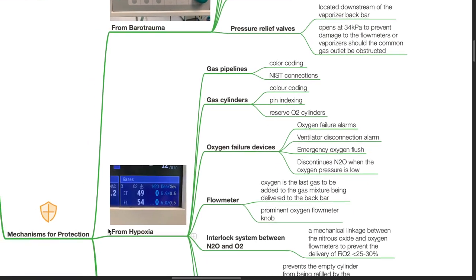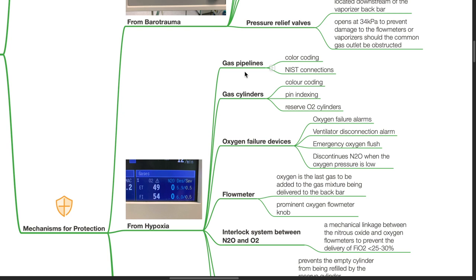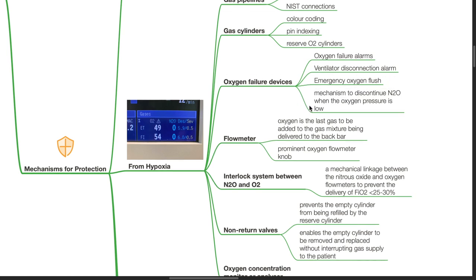Mechanisms for protection from hypoxia. Gas pipelines are color coded and have NIST connections. Gas cylinders are color coded, pin indexing is present and reserve oxygen cylinders are present. Oxygen failure devices such as oxygen failure alarms, ventilator disconnection alarm, emergency oxygen flush and mechanisms to discontinue nitrous oxide when the oxygen pressure is low.